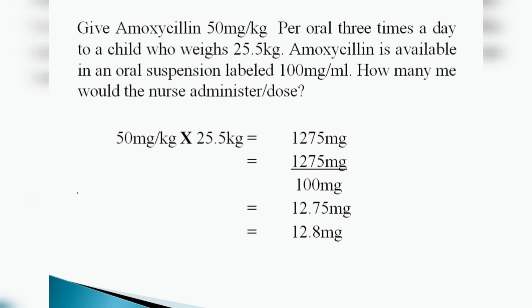A worked example: amoxicillin is given at 50 mg per kg per oral to a child weighing 25.5 kg. Amoxicillin is available as an oral suspension labeled 100 mg per ml. How many ml would the nurse administer per dose? Multiply 50 mg by 25.5 kg to get 1275 mg. Then divide by the concentration: 1275 divided by 100 equals 12.75 ml. By multiplying the body weight by the dose and dividing by the available concentration, we can calculate the quantity.